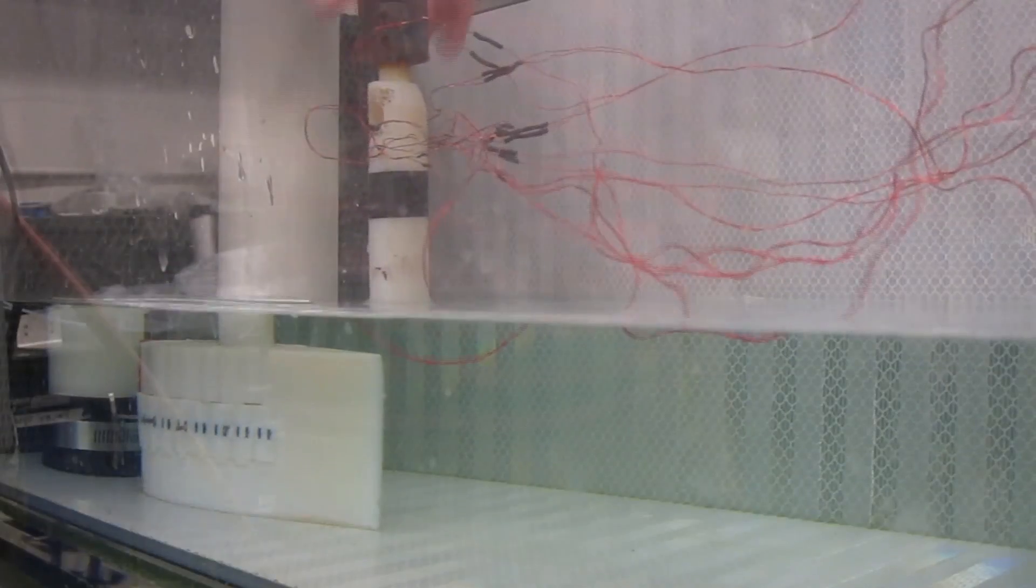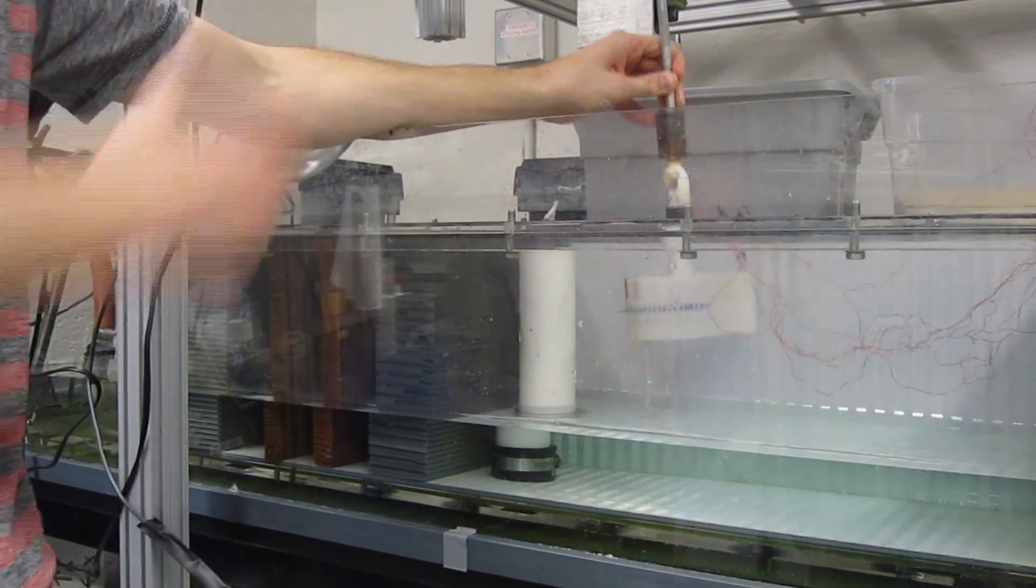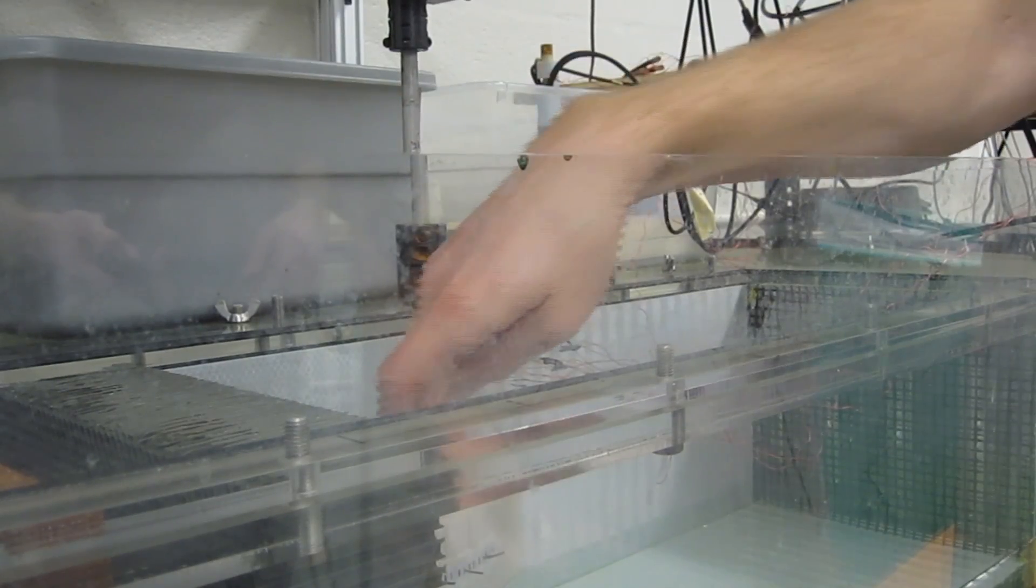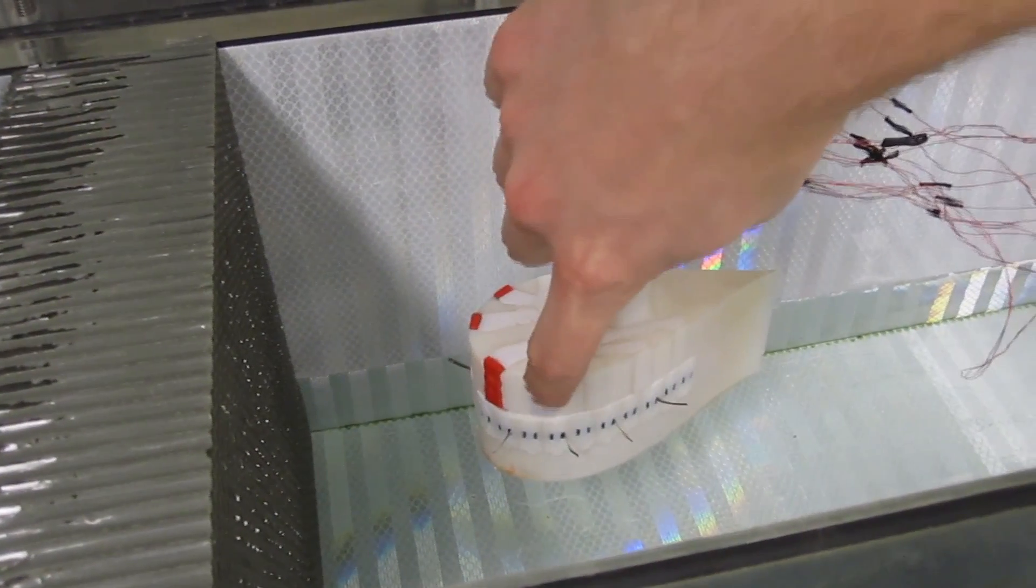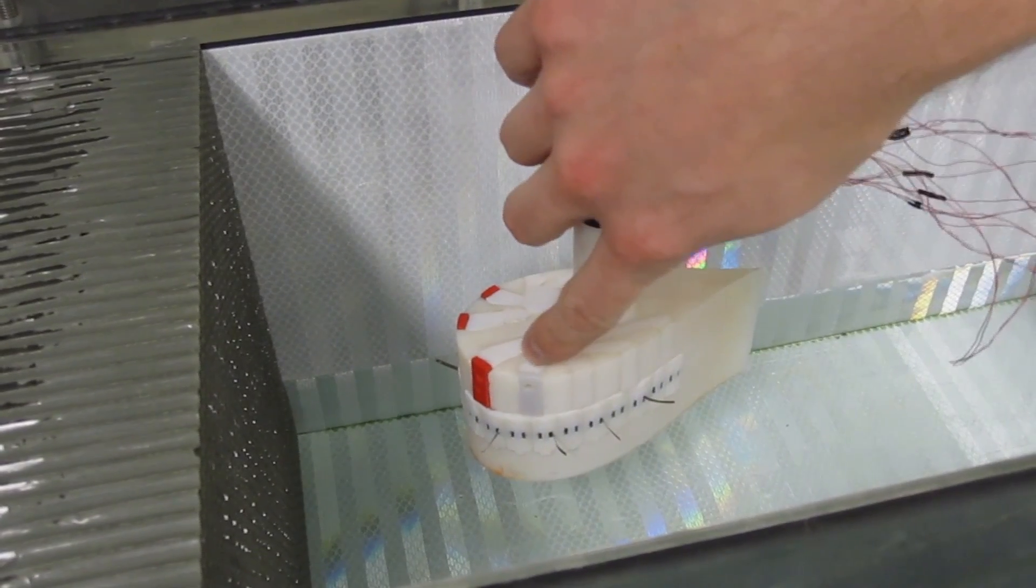And the basic idea that we're trying to accomplish is translating a basic understanding of how fish sense their environment into a robotic platform. So this robotic fish is outfitted with eight sensors that emulate how a fish senses its surroundings.